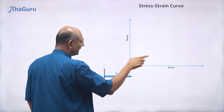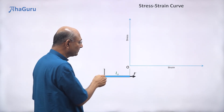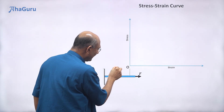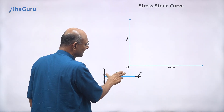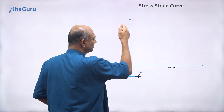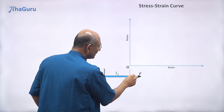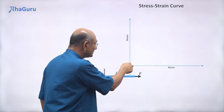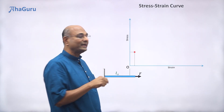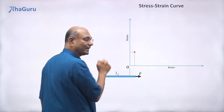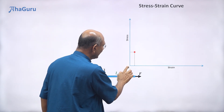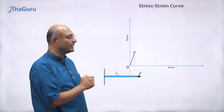Now I'm going to apply a small force F. The rod will elongate by delta-L, giving a strain of delta-L by L-naught and a stress of force divided by cross-sectional area. For small forces, stress is directly proportional to strain — that is Hooke's law — so we get a straight line from the origin to this point.